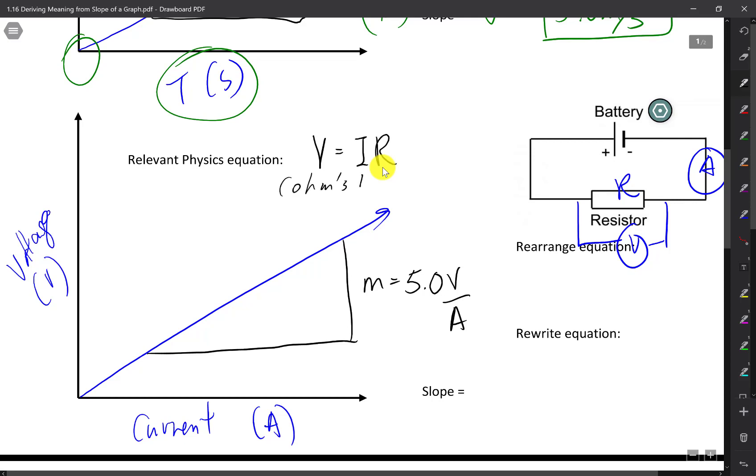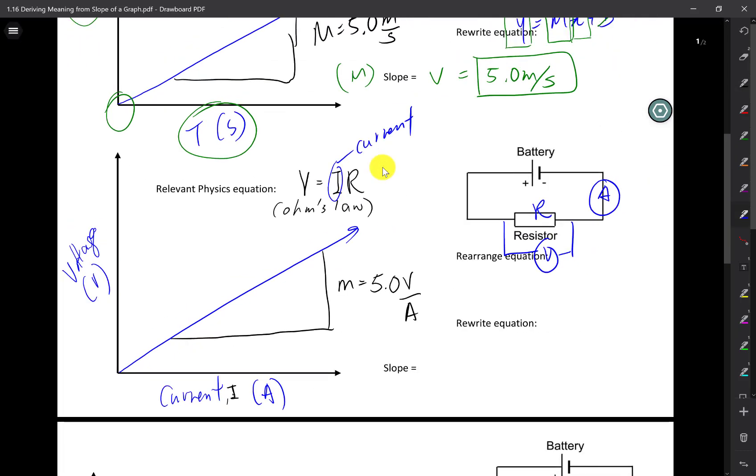This is Ohm's Law. V voltage equals current, which is I. Current times resistance. This is current. Now, it looks like I don't need to rearrange my equation because I have my Y already isolated in the Ohm's Law already. But what I might want to do is I might want to write the equation like this. I'm going to write it like V is equal to R times I.